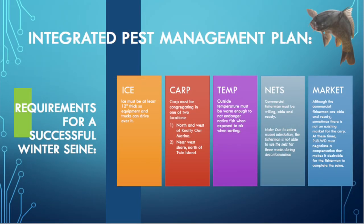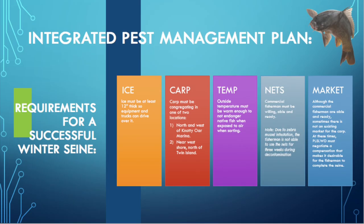There are certain requirements that need to be met in order to have a carp SANE. This includes having thick enough ice, warm outside temperatures so the native fish aren't in danger while sorting, carp congregated in one place, commercial fishermen ready with their nets, and there has to be an existing market for the fish to be sent after removal. All of these factors are extremely hard to accomplish at the same time, but are essential to a successful carp SANE.